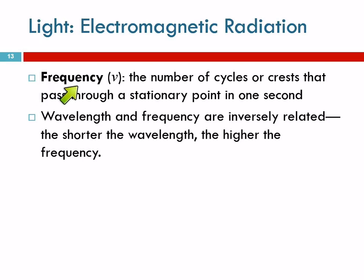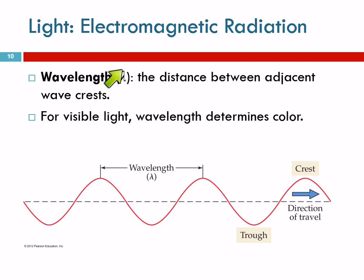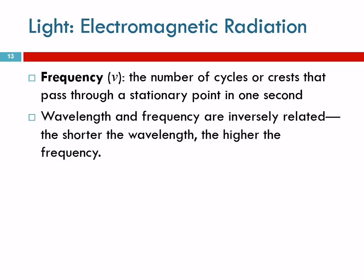Another important thing is frequency. The symbol we use for wavelength is the Greek letter lambda — it's like an upside-down Y. For frequency, the symbol looks like a V; it's actually the Greek letter nu — a curvy V. Frequency is the number of cycles, or the number of wave crests, that pass through a stationary point in one second. It's cycles per second.